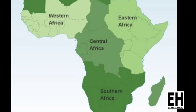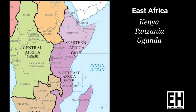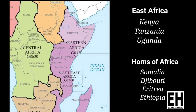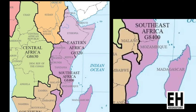The eastern part of Africa, which is also part of Sub-Saharan Africa, comprises two traditionally recognized regions: East Africa, made up of Kenya, Tanzania, and Uganda; and the Horn of Africa, made up of Somalia, Djibouti, Eritrea, and Ethiopia. Malawi and Madagascar are sometimes also regarded as East African countries.